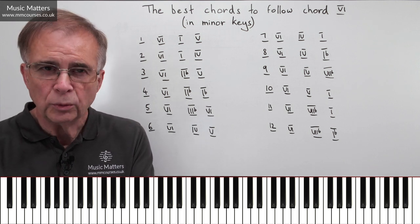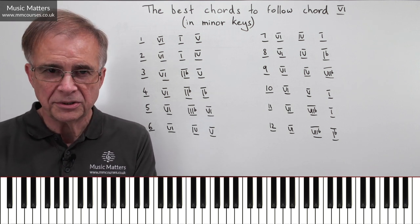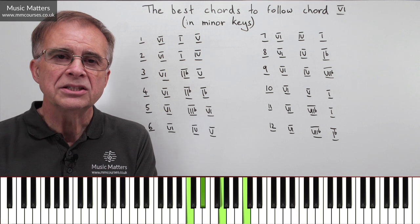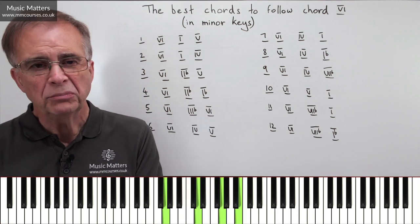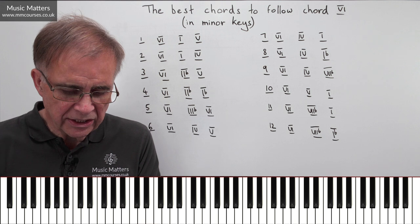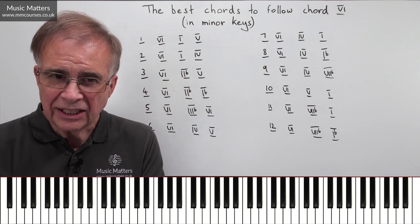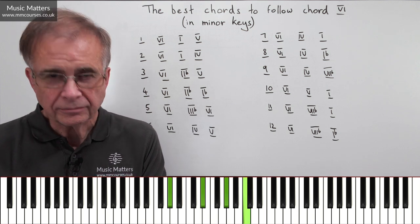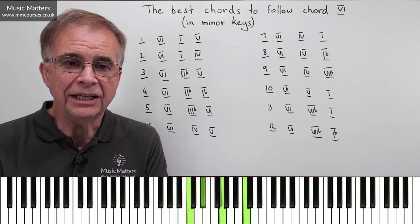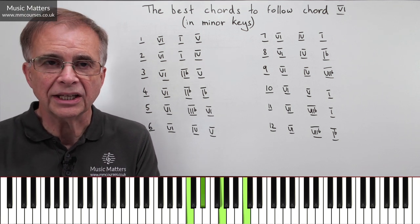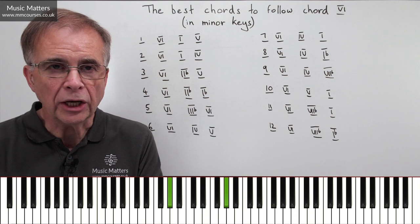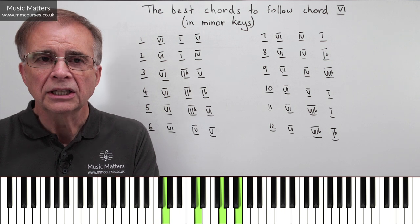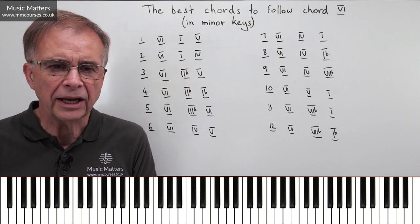Option number one, I'm going to work in C minor for the purposes of this illustration. We're going from VI to I to V. Well, that's a pretty solid way of progressing. Why does it work? Well, the great thing is in chord VI, in C minor, you've got an E-flat and a C. When you go to chord I, you've also got an E-flat and a C. So you've got two common notes there, or two common tones. So that gives a nice smooth progression, and then possibly going on to chord V to follow. So nothing too radical about that.